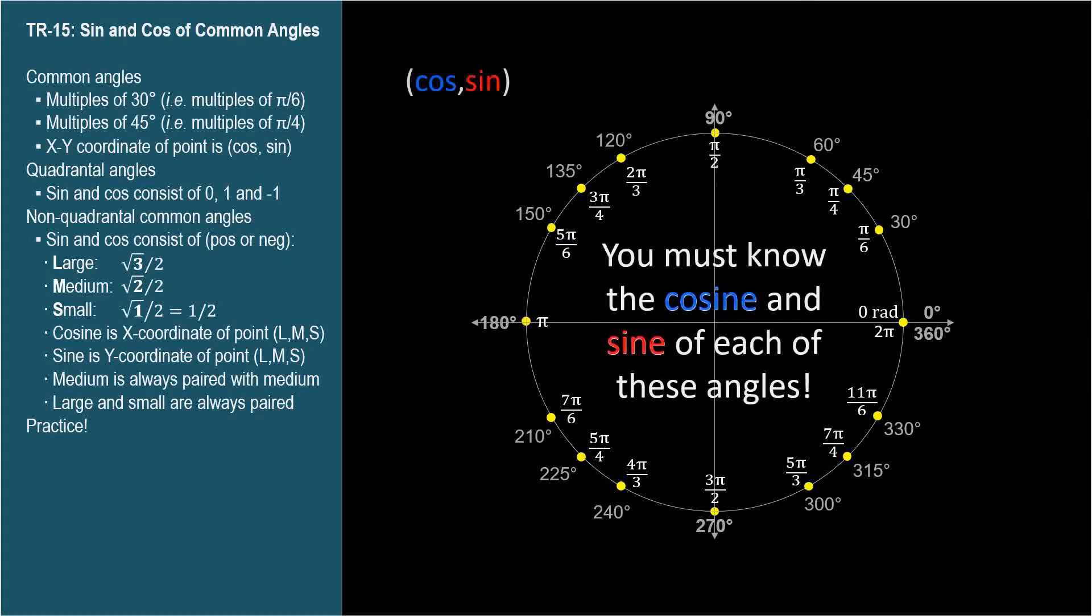You must know the cosine and sine of each of these angles. The cosine and sine are simply the x and y coordinates of the angle's point on the unit circle. We're not going to bother knowing the values of the other four trig functions because they can all be derived from cosine and sine.